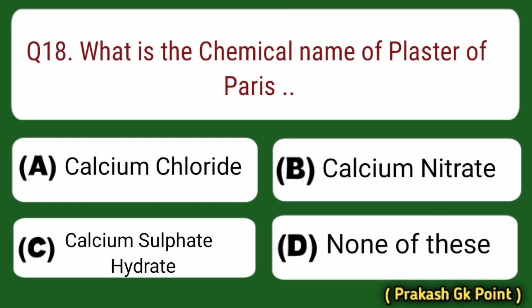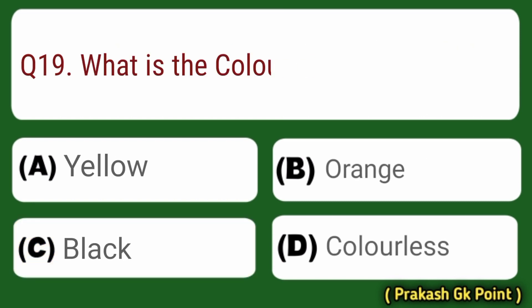Next question: what is the chemical name of plaster of Paris? Answer: Option C — Calcium sulfate hydrate.